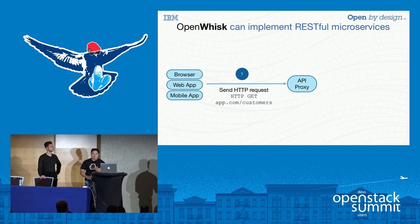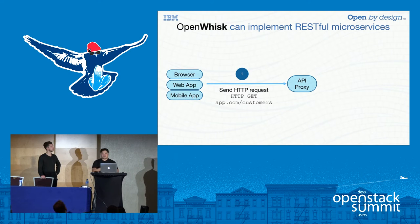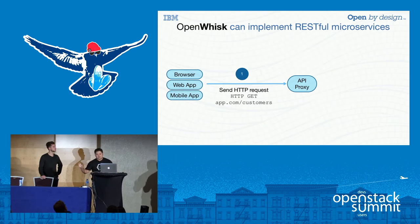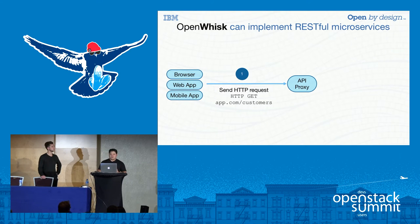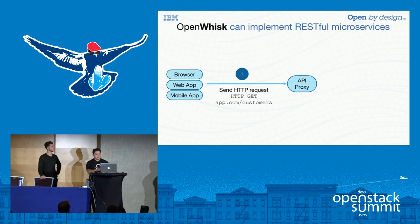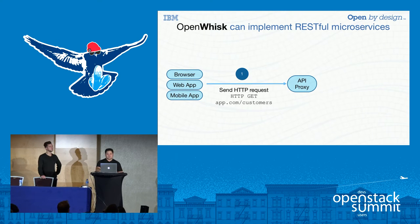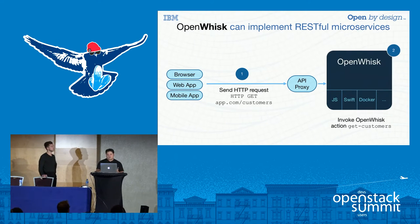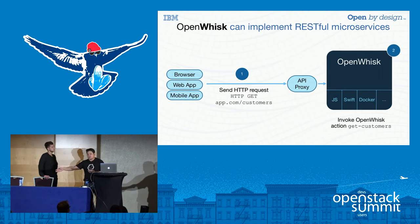OpenWhisk at a high level has the notion of an API proxy which routes any incoming request for an action or trigger down to invoke your particular action. There's a REST interface that can be consumed by browsers, web apps, mobile devices, and so on. For example, if I want to get customer data that my application needs, it's a simple request through OpenWhisk to run an action to get that data from a back-end source.